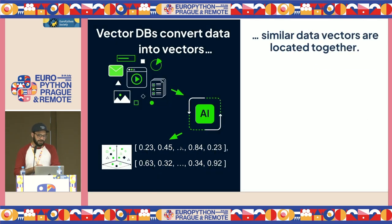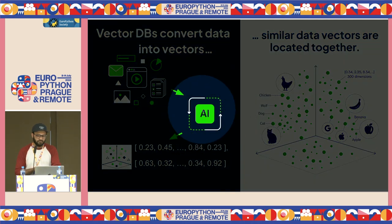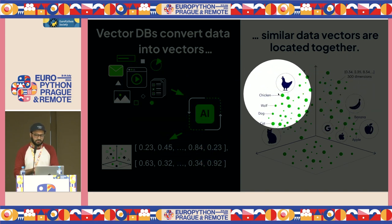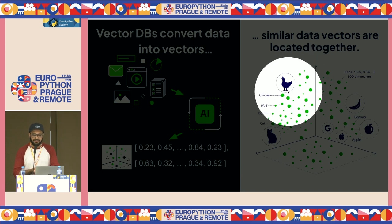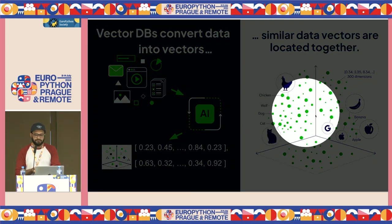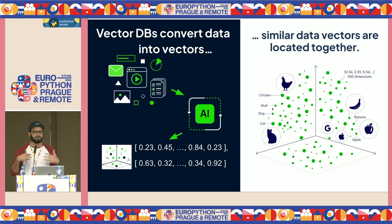To understand this better, we plot these vectors into some three-dimensional vector space. As the last speakers mentioned, this vector is typically anywhere from 1,000 to 4,000 dimensional, but here I've shown it in 3D. These machine learning models preserve a lot of the meaning behind the data. So if I have an image of a chicken and the word chicken, those two vectors are going to be closer together in vector space, whereas dissimilar concepts like a wolf and a banana are going to be farther apart.